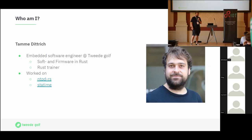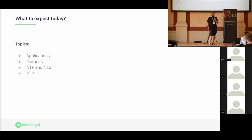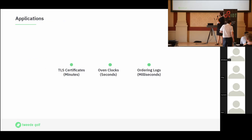I also worked on statime, a modern implementation of the Precision Time Protocol in Rust. What I'm going to talk about today is the applications of time synchronization — basically why you would want to synchronize time and where. Then some methods: how do you synchronize time between devices? We'll look at NTP — the Network Time Protocol — together with NTS, the Network Time Security protocol, and PTP, the Precision Time Protocol.